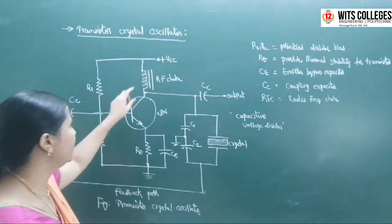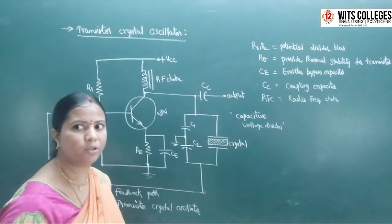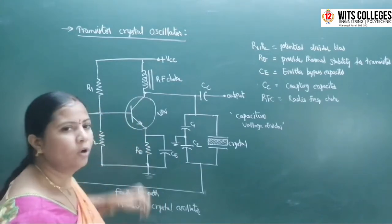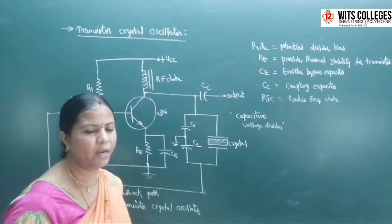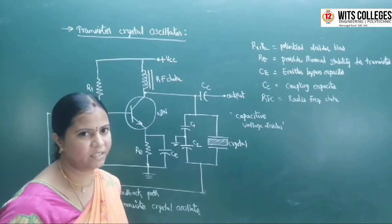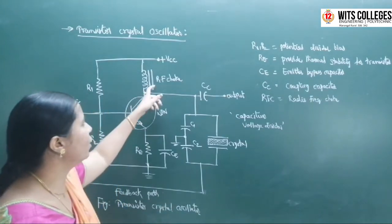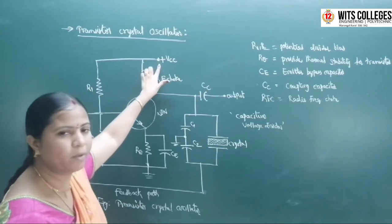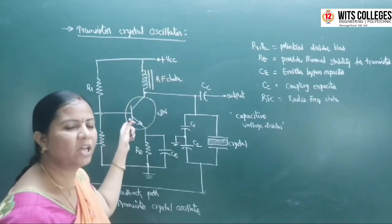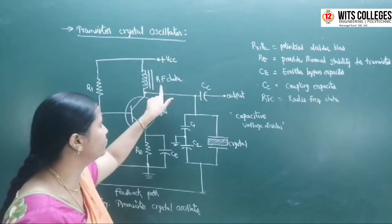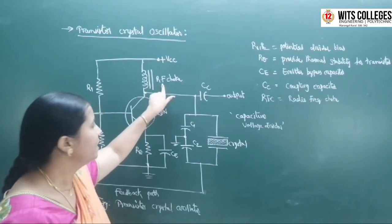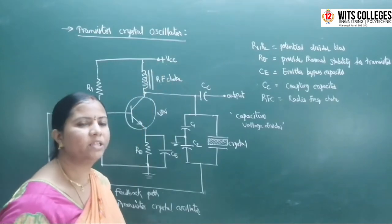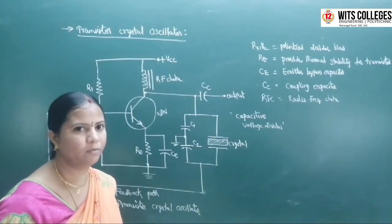Coming to the radio frequency choke — the radio frequency choke is used to allow DC signal and block the AC signal. If you are not using the radio frequency choke, the AC signal coming from the power supply will distort the output signal.